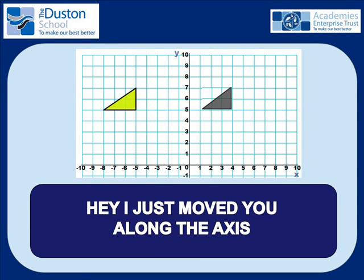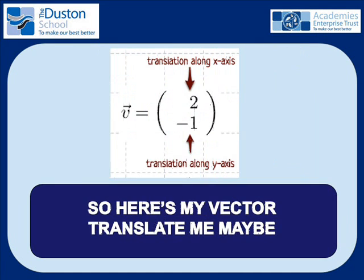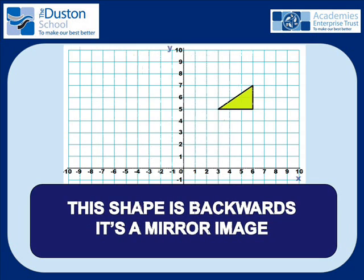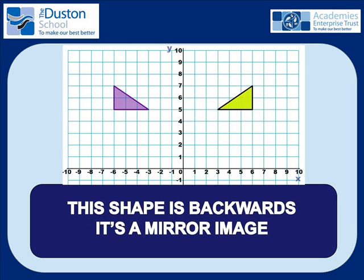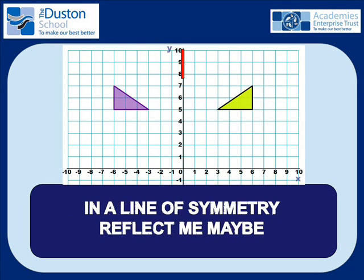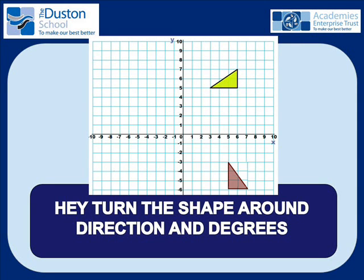I just moved you along the axis, so here's my vector — translate me maybe. This shape is backwards, it's a mirror image, in a line of symmetry — reflect me maybe.